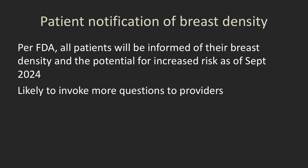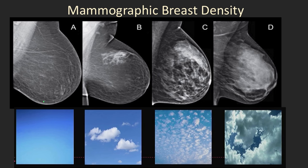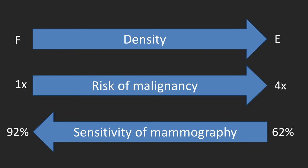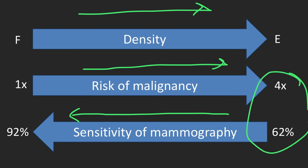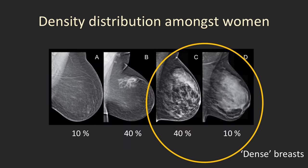Here are some examples of breast density — fatty, scattered, heterogeneously dense, and extremely dense. As density increases from fatty to extremely dense, the risk of malignancy increases fourfold and the sensitivity of mammography decreases. Patients who have extremely dense breasts have a double whammy: they're more likely to get breast cancer and we are less likely to pick it up. Dense breasts account for about 50 percent of the patient population, so this is really a significant number.